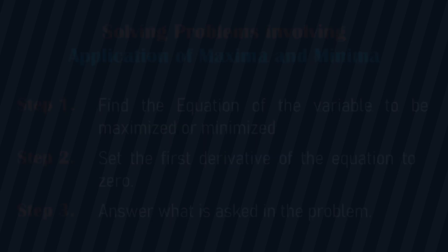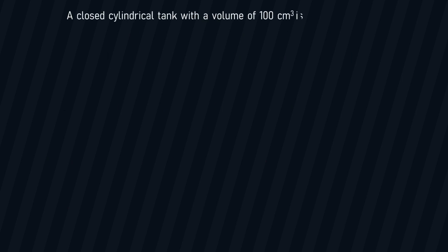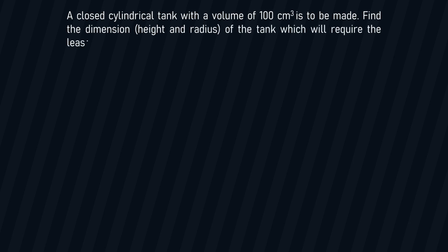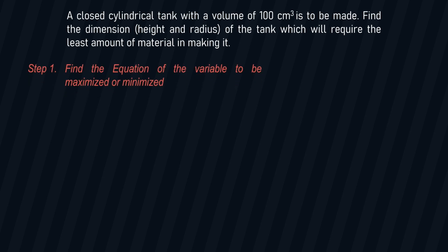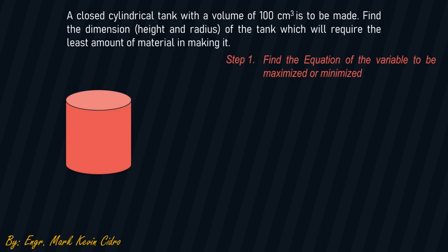Let's have another problem. A closed cylindrical tank with a volume of 100 cubic centimeters is to be made. Find the dimensions — the height and the radius — of the tank which will require the least amount of material in making it. We'll apply step number one: find the equation of the variable to be maximized or minimized. In this case, we are minimizing the amount of material used. We let H be the height and R be the radius.